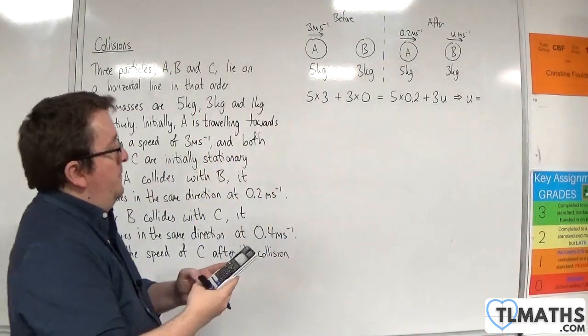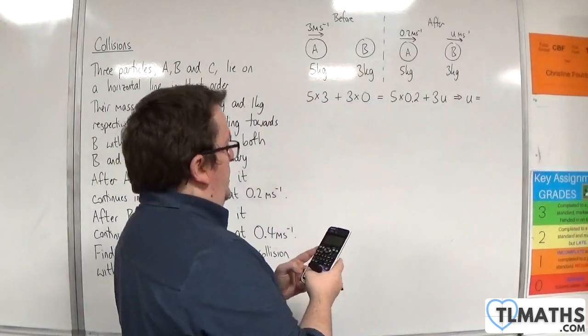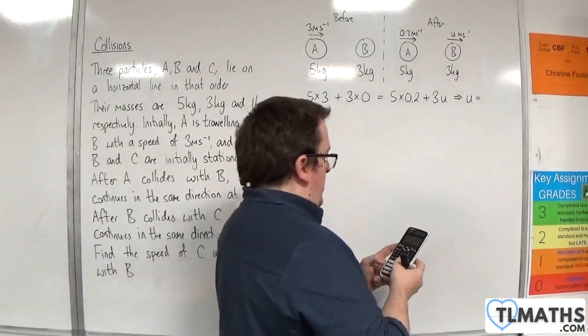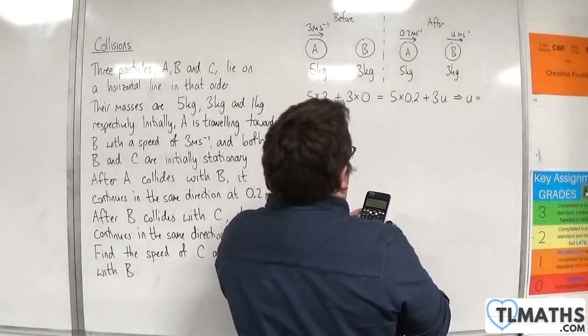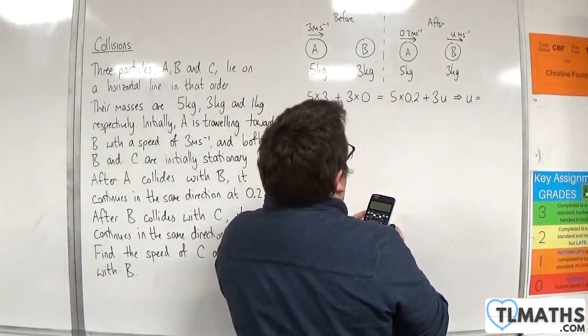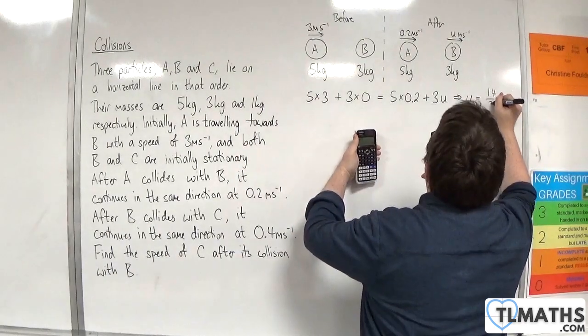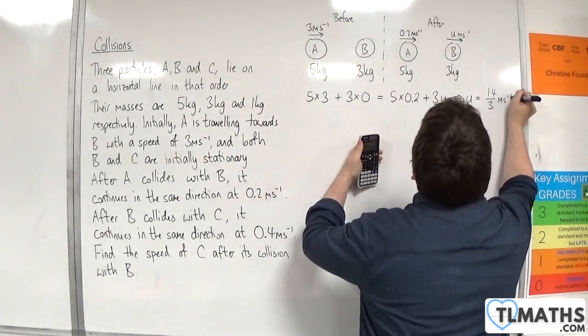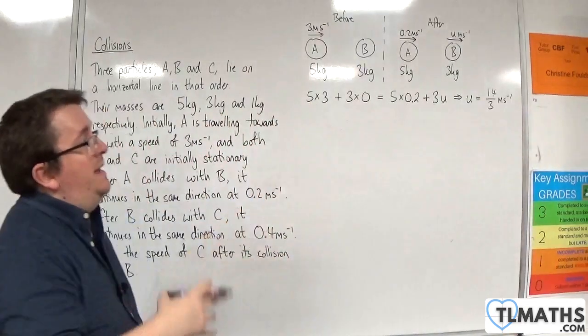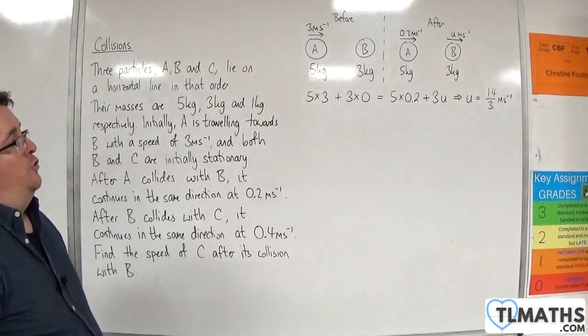So 5 times 3, then I need to take away 5 lots of 0.2 and then divide through by 3. So that would be 14 thirds. That will be the speed of B after the collision.